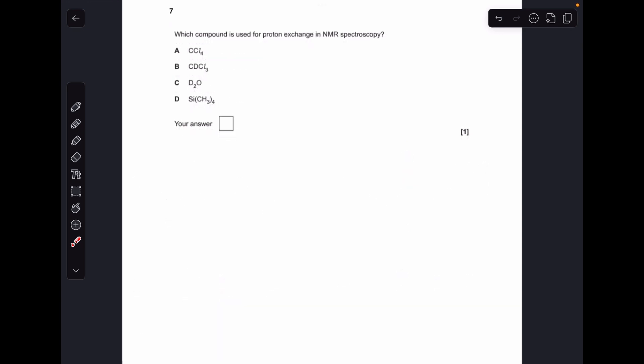Moving on to number seven, so proton exchange is when you add a certain substance and it removes any NH or OH protons, and that certain substance is D2O, so the answer was C.